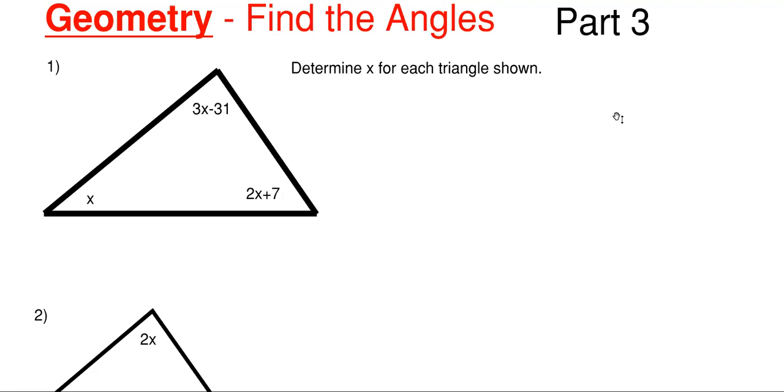So what we're going to do today is we're going to be looking at geometry, and we are going to be finding some missing angles or missing values inside of angles for triangles, and this will be our third part in this series. So we have two triangles to work with, and both of these we're going to have to find some hidden variables that will form angles inside each of these triangles.